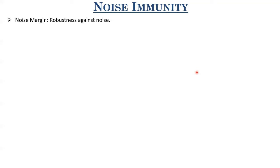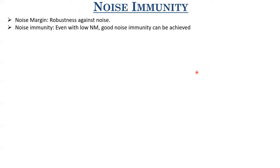There are also a few other parameters related to noise. One of them is noise immunity. What exactly does noise immunity mean? It means the capability of your circuit to reject noise sources. There are some circuits which have even very low noise margin, but they are able to reject noise sources and perform well even in the presence of large noise. These noise sources are distributed across the circuit, and how they couple to the signal node under consideration is an aspect covered under noise immunity.